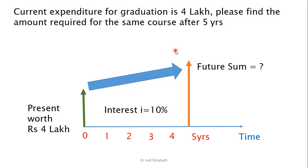Let's see compound interest factors using a simple situation. A current expenditure for graduation is Rs. 4 lakhs. Please find the amount required for the same course after 5 years. A parent decides that after 5 years, his son or daughter has to do graduation. The current cost is Rs. 4 lakhs, and he wants to know what the future amount will be if the rate of interest is 10%. This can be solved very easily using compound factor tables and equations.